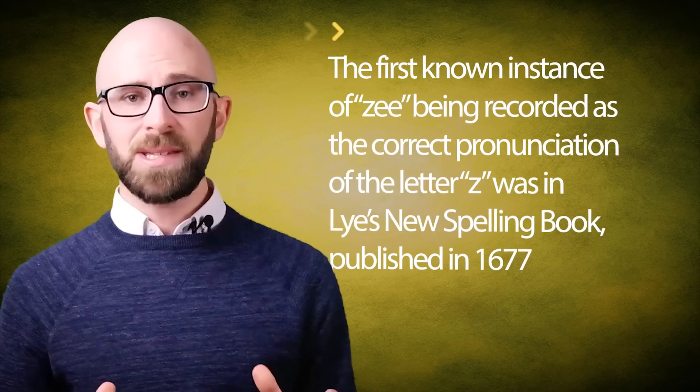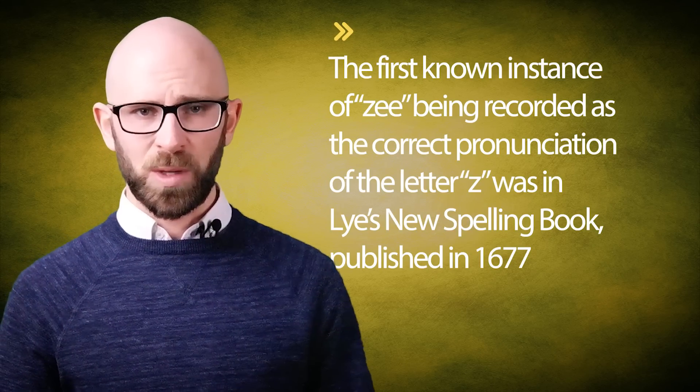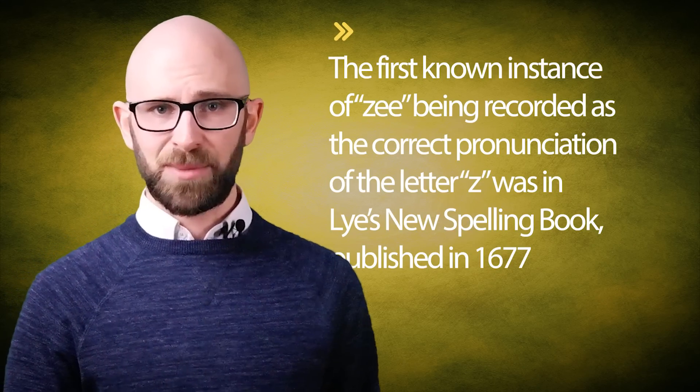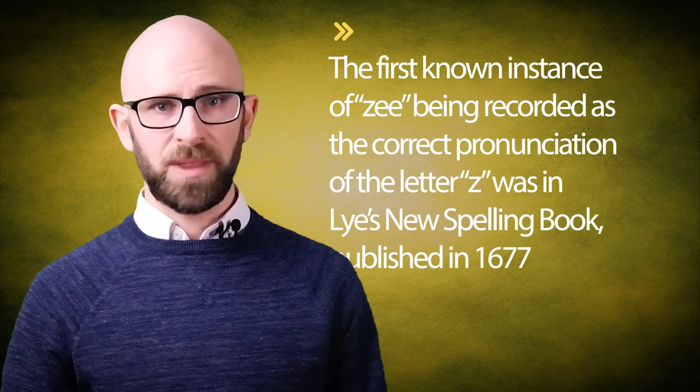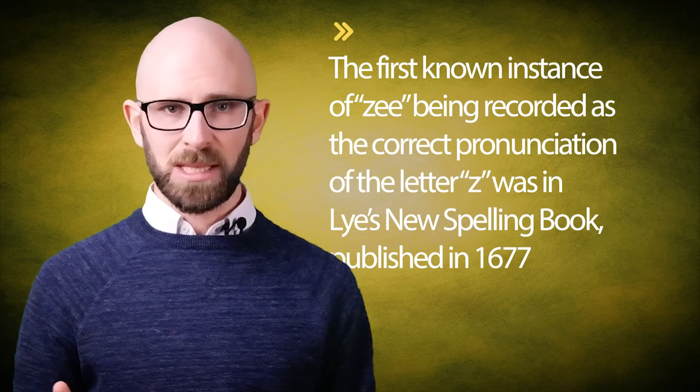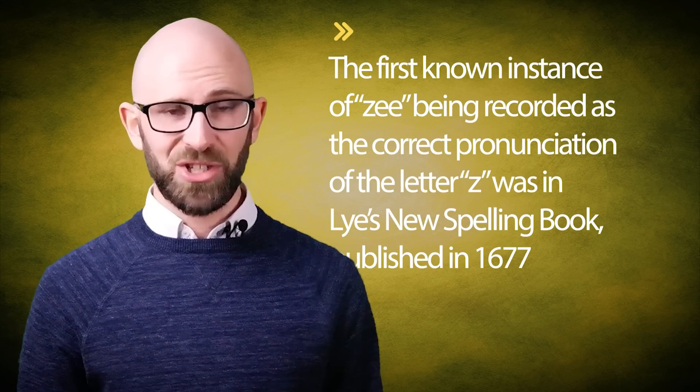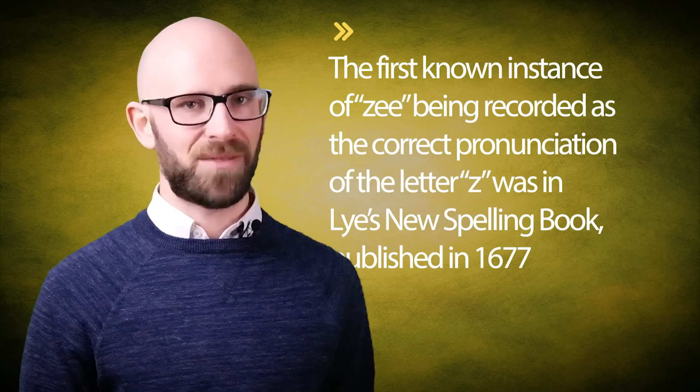As to why people in the United States call Z 'Zee', this is likely simply adopted from the pronunciation of the letters B, C, D, E, G, P, T, and V. The first known instance of 'Zee' being recorded as the correct pronunciation of the letter Z was in Lye's New Spelling Book, published in 1677.